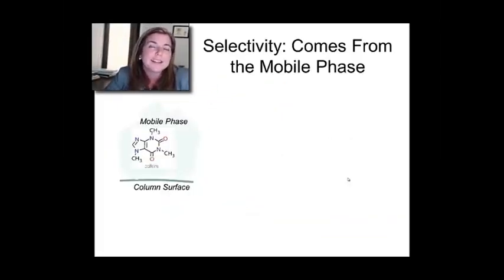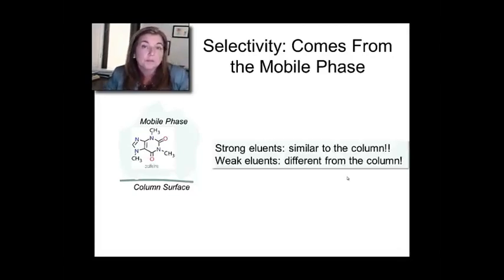And here's why. You can think of the mobile phase as a kind of blanket. And it can blanket the column. And if it's a lot like the column, it blocks the column. It says to the analytes going by, I don't want you to be part of my party. I'm interacting with this column. And it actually keeps the analytes from partitioning into the column. On the other hand, if the mobile phase is very different from the column, it won't do that. So a strong eluent - eluent, remember, is a term for the mobile phase - is going to be very similar chemically to the column. Whereas a weak eluent is going to be dissimilar.